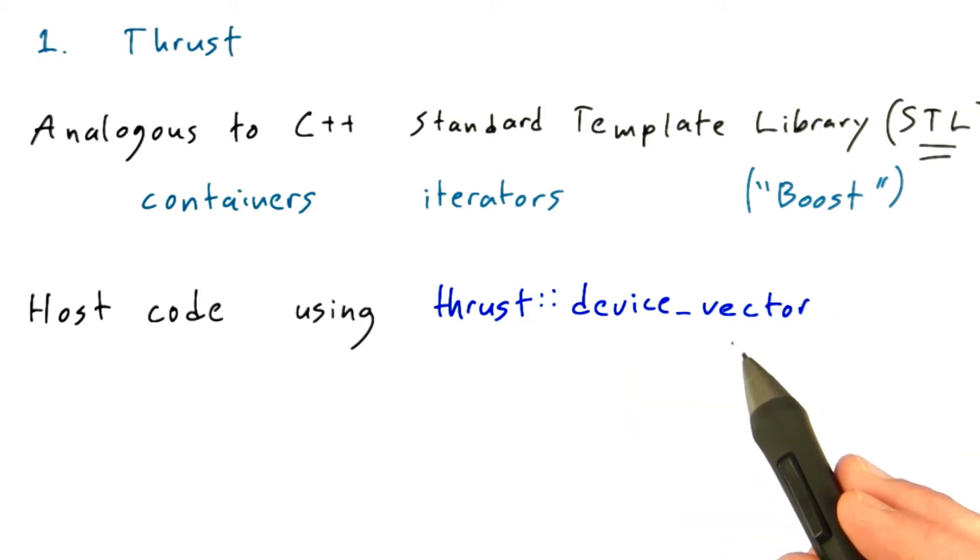This is analogous to the vector container in STL, but as the name implies, it lives on the device, on the GPU. Like the STL vector container, Thrust device vectors are generic containers, which means they're able to hold any data type, and they can be resized dynamically.